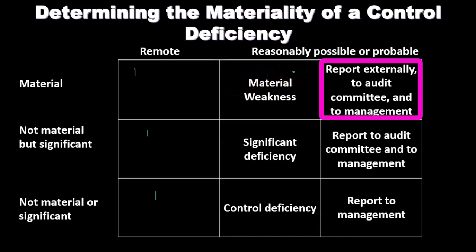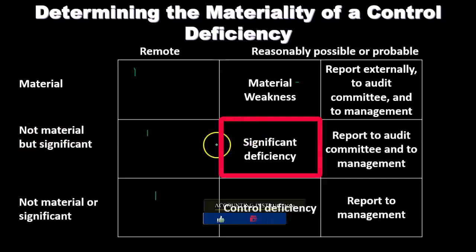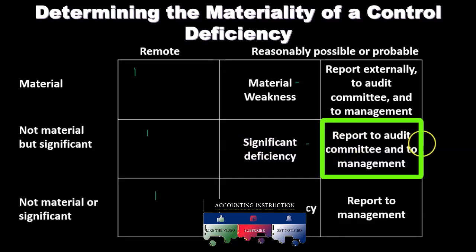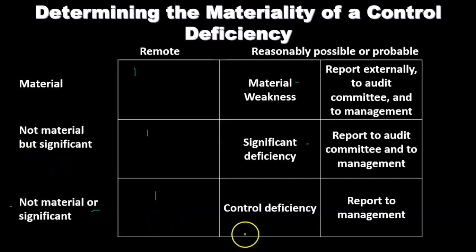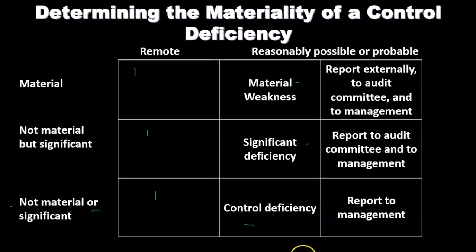If it's not material but significant and remote, no action. If it's reasonably possible or probable and significant, that's a significant deficiency — report to the audit committee and to management. If it's not material or significant — that's using 'or' as opposed to one or the other — then we have a control deficiency, and we simply report that to management. That's the least severe case.